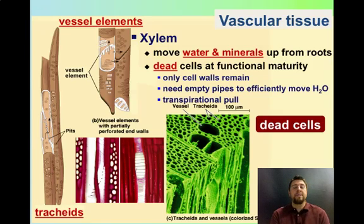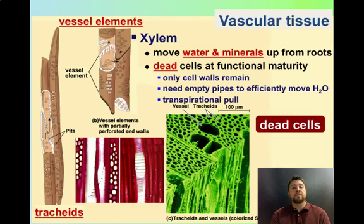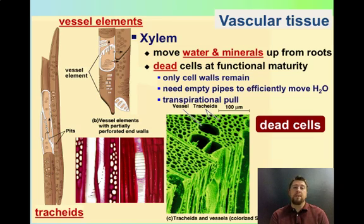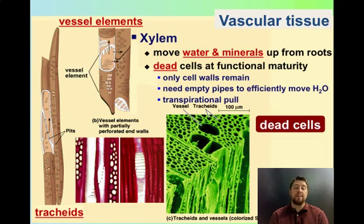The material that transports water and sugars in plants is called vascular tissue. It's a lot like our veins and arteries in our body. The type that transports water is called xylem. Since plants need water up in the leaves but all the water occurs down on the ground, this involves moving up from the ground up to the leaves.